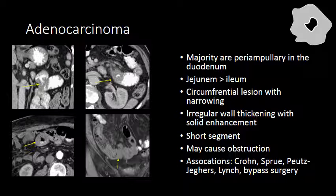The mass tends to have irregular thickening with solid enhancement and tends to involve a short segment of bowel. The annular constriction may result in obstruction of the bowel, and sometimes these will present with gastric outlet obstruction or small bowel obstruction. Adenocarcinoma of the small bowel is associated with Crohn disease, chronic inflammation seen with Sprue, genetic abnormalities such as Peutz-Jeghers or Lynch syndrome, and bypass surgery resulting in an abnormal GI stream that causes dysplasia, which can eventually turn into an adenocarcinoma.